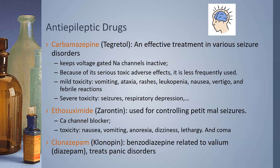Ethosuximide, or Zarontin, is used for controlling absence seizures. It is a calcium channel blocker and toxicity presents as nausea, vomiting, anorexia, dizziness, lethargy, and potentially coma. Clonazepam, or Klonopin, is a benzodiazepine related to valium (diazepam) and is used to treat panic disorders.